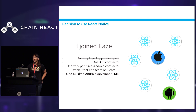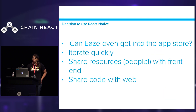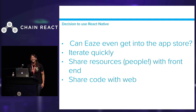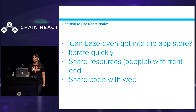Then I joined the team and now we also had one full-time Android developer. We had a few questions to address. First off, can Ease even get into the app store? We wanted to spin up a cross-platform experience pretty quickly, just a really basic sign-up flow, see if we could get into the app store and iterate on that. In addition, we wanted to be able to share resources — meaning people — with our sizable front-end team on React.js, and it would be really great if we could also share code with web.